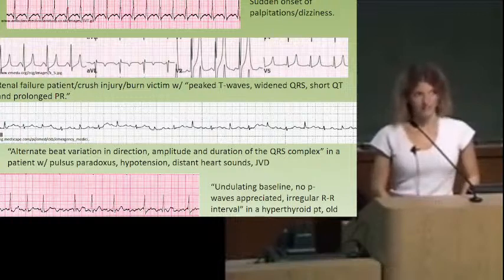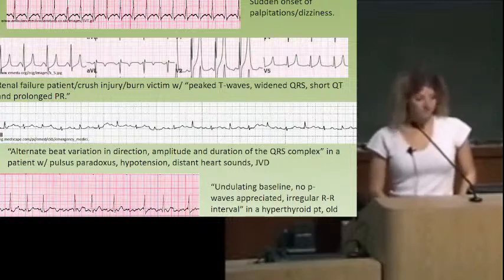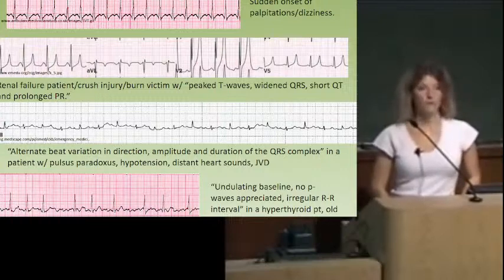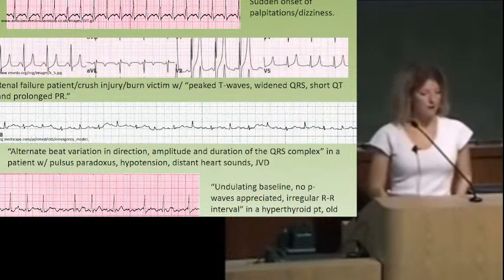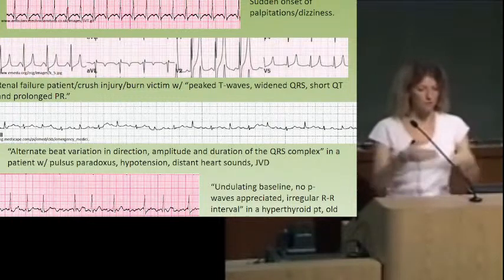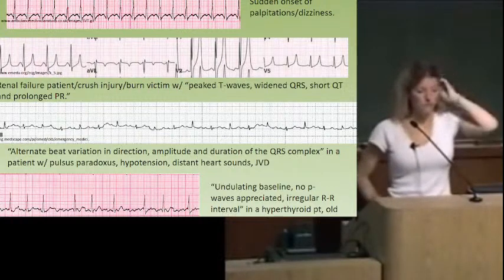The fourth EKG: you can't really see P waves — it's just some squiggly business along the baseline. This is AFib. They might describe it as an undulating baseline, can't see P waves, and it's irregularly irregular. In the clinical vignette, the patient might be hyperthyroid, someone who took too much Synthroid, an older person with sudden palpitations and shortness of breath, or someone with CHF and valve disease — bad mitral valve leads to dilation of the left atria, which predisposes to AFib.